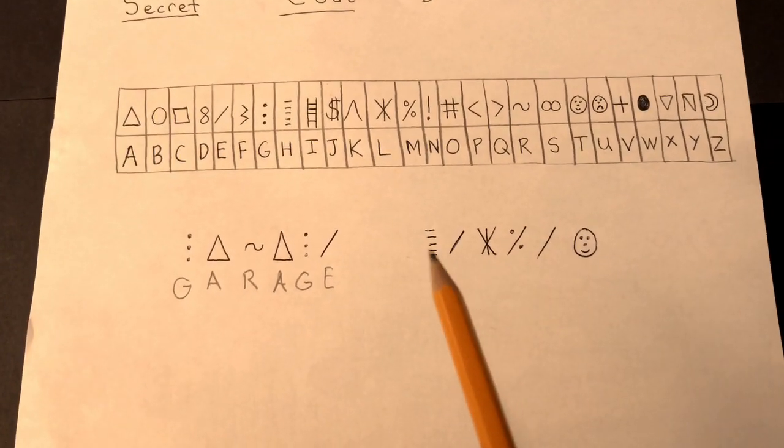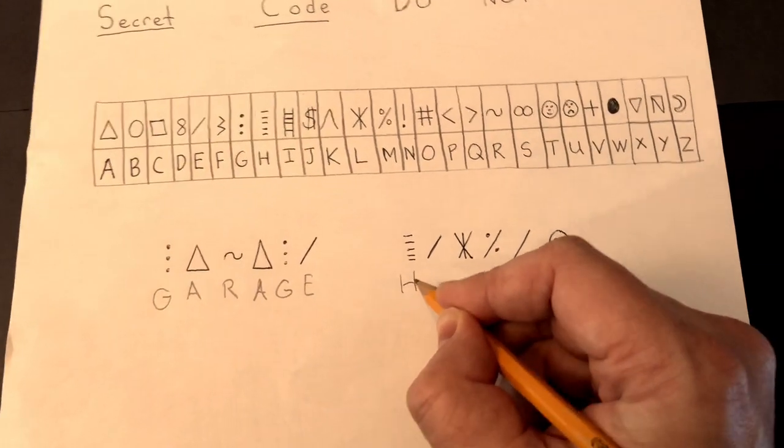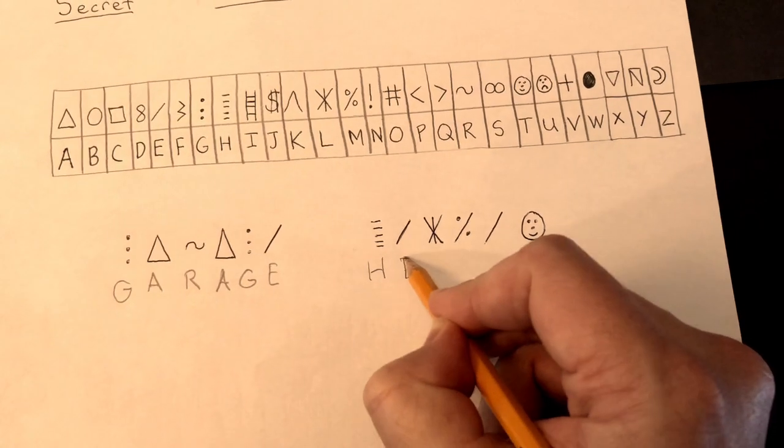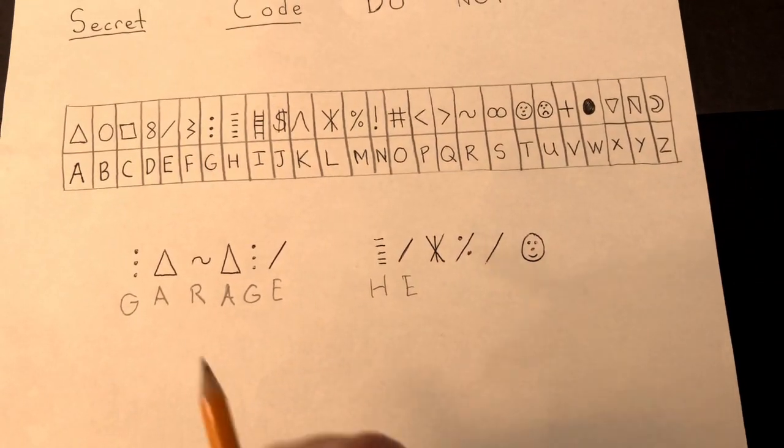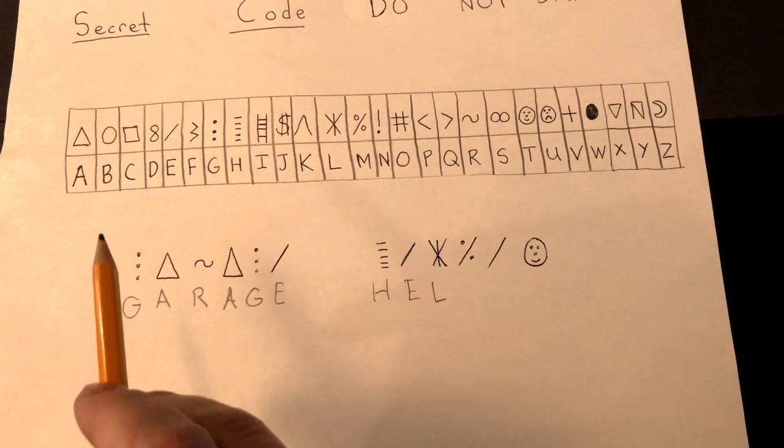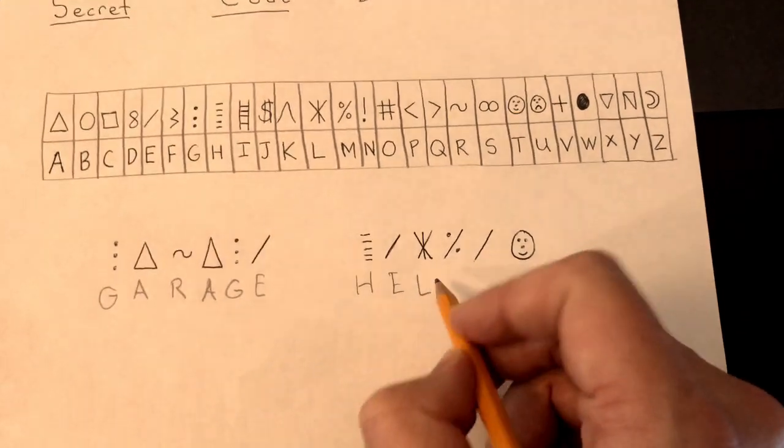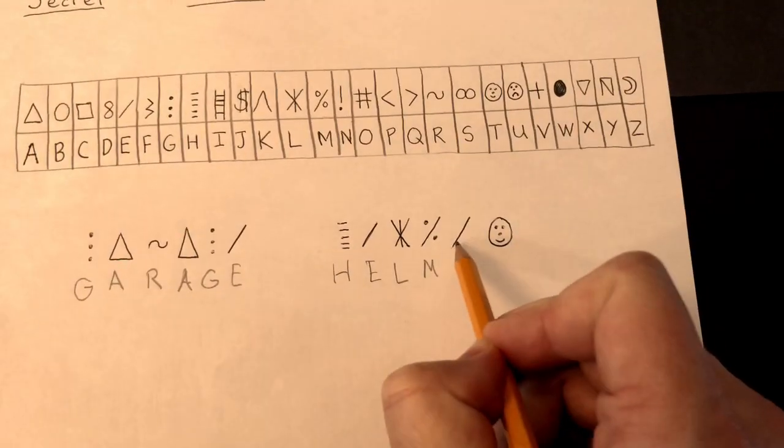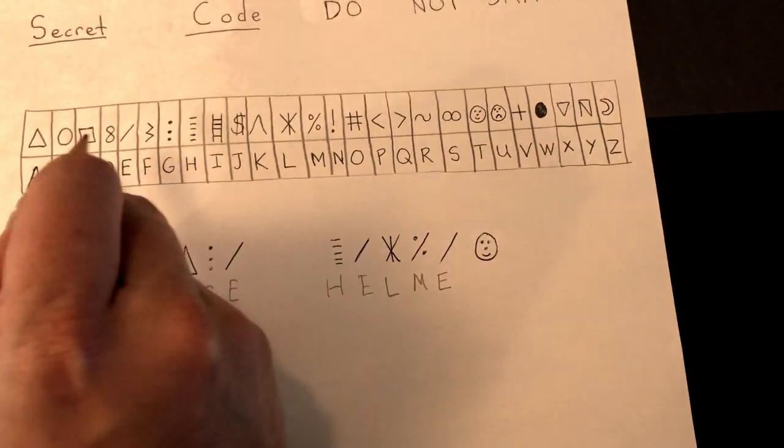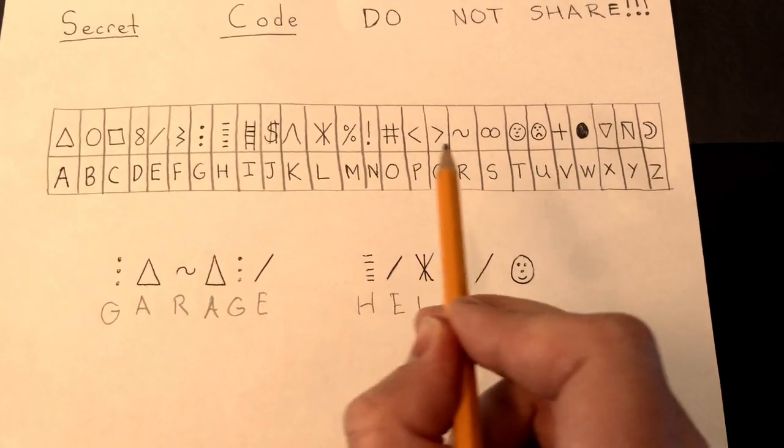Next. H. E. L. M. Oh, I've seen this one before. It's over here. It's going to be an E. I don't even need to check my list. And the last one is a smiley face. T.